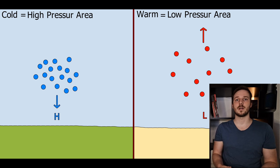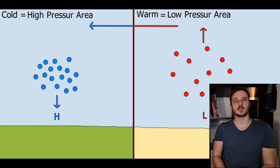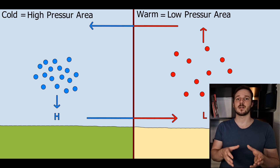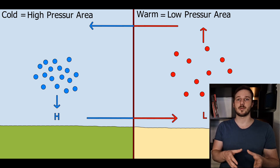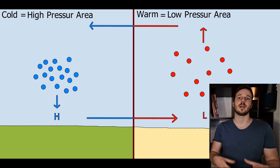What happens to the warm air in the upper atmosphere is it cools down and will flow towards the pole. And what happens at the surface is that the air on the high pressure area tries to get to the low pressure area to compensate the pressure.